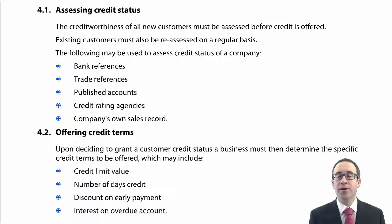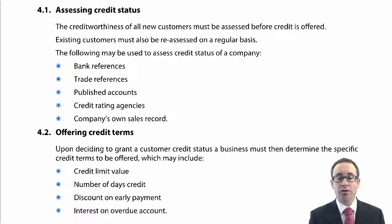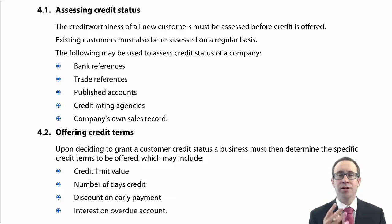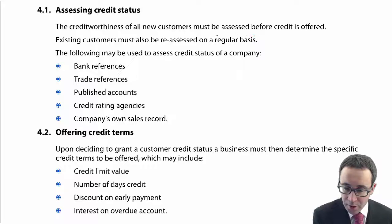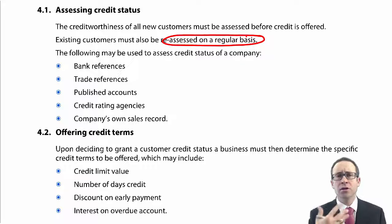The notes go through and look at those three separate areas, giving you additional information to help you understand what we mean by assessing the credit status, offering credit terms, and the management of cash collection. The first area looks at assessing the creditworthiness of the customer to see whether or not we should grant them credit in the first place. One key aspect to appreciate is that we don't just do this process when we first offer credit to the customer — it must be reassessed on a regular basis.